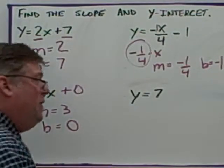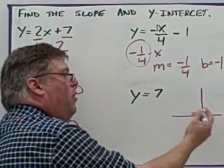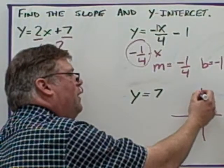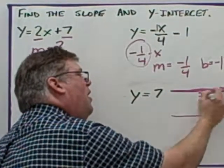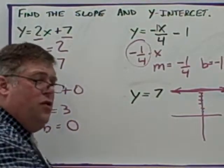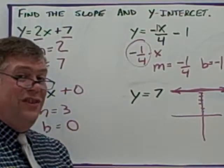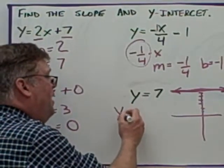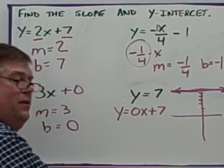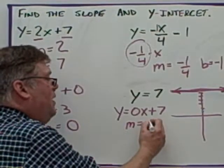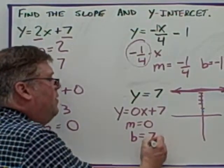Over here we have y equals 7. If you were to graph that on a coordinate plane, you would go up 7 units — y equals 7 would be a horizontal line. What do we know about the slope of horizontal lines? They are 0. This is just like saying y equals 0x plus 7, so the slope is 0 and the y-intercept is 7.